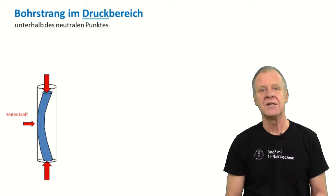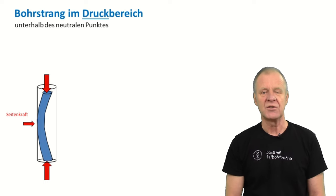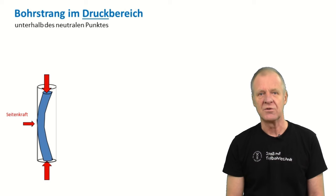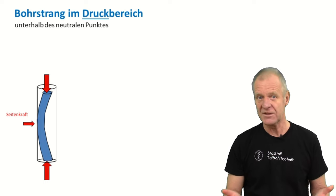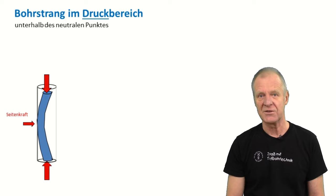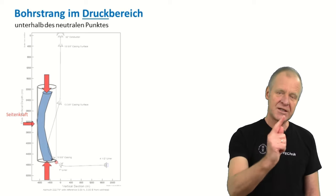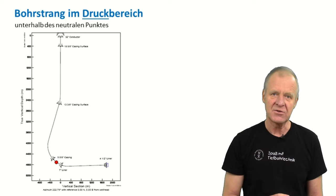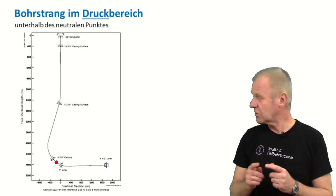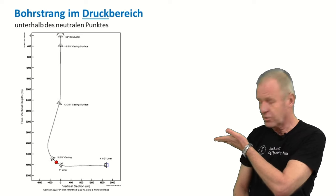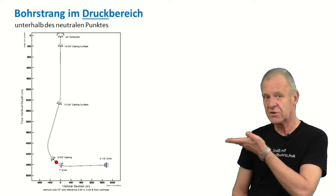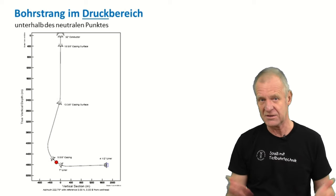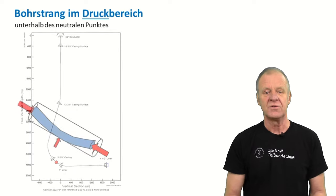The more friction we have between the string and the borehole, the more difficult it becomes to push the drill string forward. Of course, the friction effects get even worse in horizontal boreholes, and most deep boreholes are deviated or horizontal today, at least at the lower end.